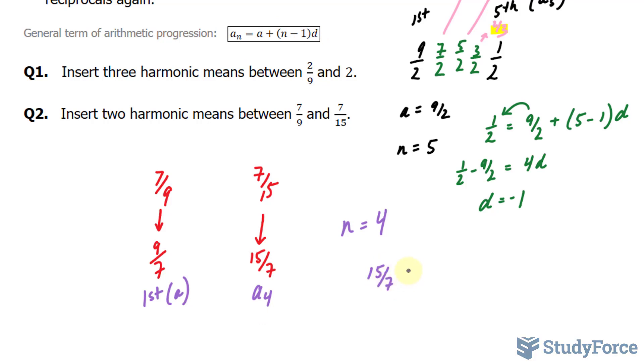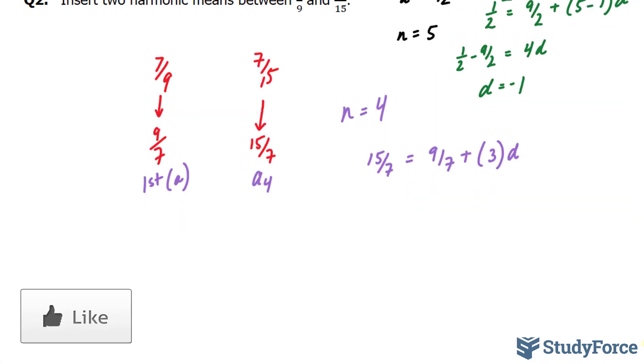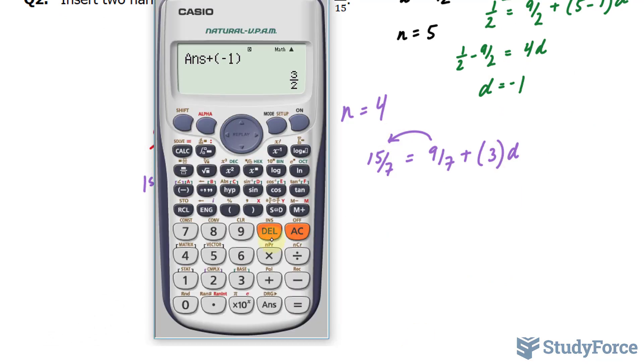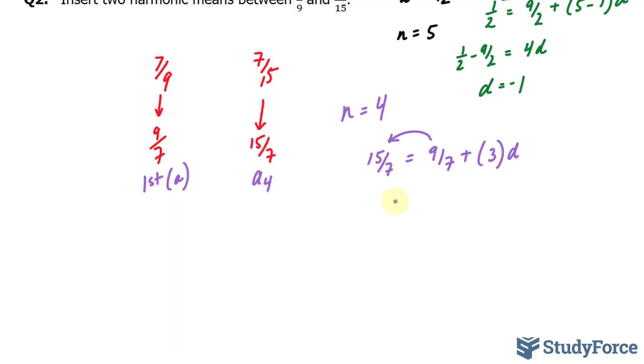15 over 7 is equal to 9 over 7 plus 4 minus 1 is 3. And d is what we're looking for. Let's bring that over and solve for d. Bracket 15 over 7 minus 9 over 7. That's the left side. Divide both sides by 3. We get 2 over 7.